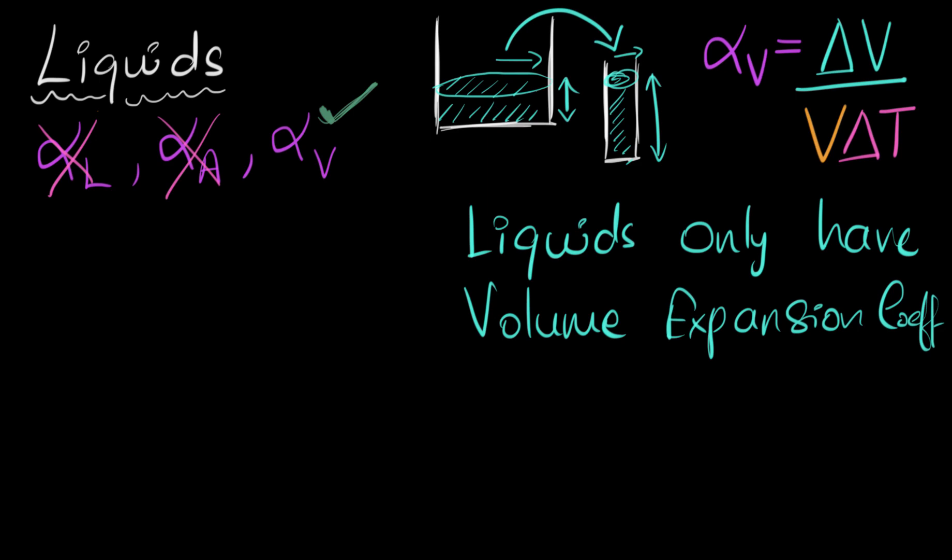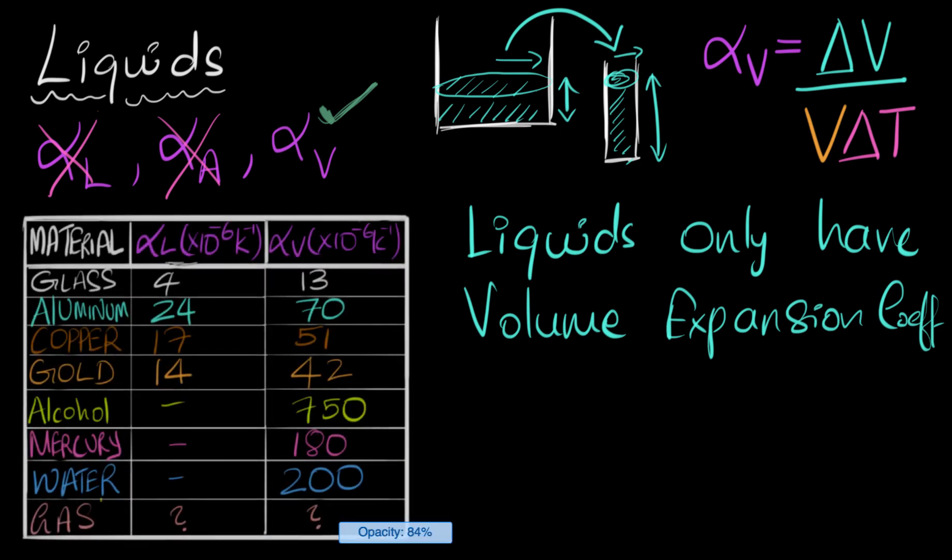All right, let me show you a table now. Here it is. Now, if you've seen previous videos, then you may have seen these values before. These are alpha L and alpha V values of some solids, but now we have also added in liquids: alcohol, mercury, water. And look, they don't have any linear expansion coefficient values. Just now we discussed, they only have volume expansion coefficients.